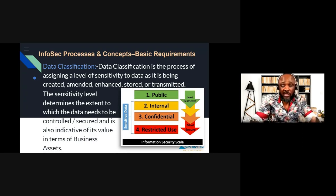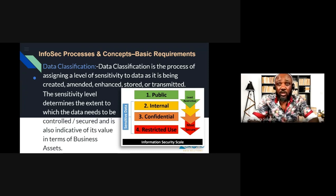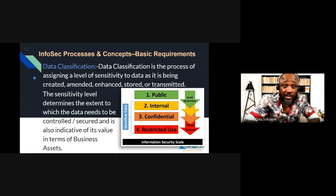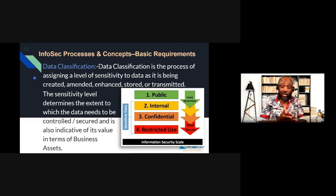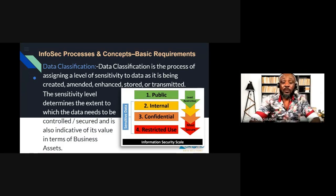Then we have Confidential information — data to be used by specific people for business that has no reason to be known by everybody. And then we have Restricted data — these are intellectual properties, the core things that make the business what it is. Maybe only the CEO and a few other people know about them, like a family recipe for a pepper soup — that's your intellectual property, sometimes not even stored online but as a hard copy in a safe.